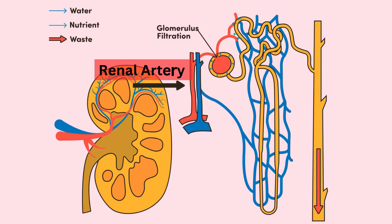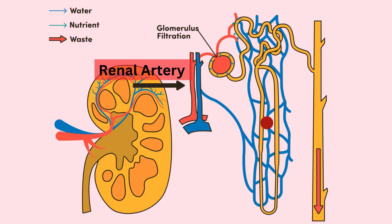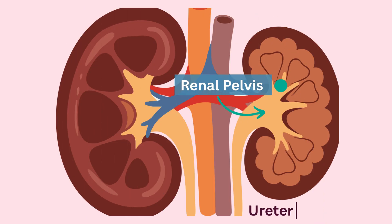Blood enters each kidney through the renal artery and urine is filtered out of the blood in nephrons. The urine will travel through the papillae, collect together in the renal pelvis, and then exit down through the ureter to the bladder.